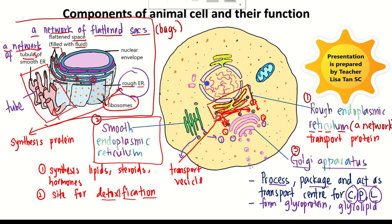The Golgi apparatus can also process protein into enzymes. Inside the vesicles, which contain hydrolytic enzymes, they are packed and then detached from the Golgi apparatus as secretory vesicles. These secretory vesicles come out from the Golgi apparatus, move toward the plasma membrane, fuse to the plasma membrane, and secrete the contents out of the cell.